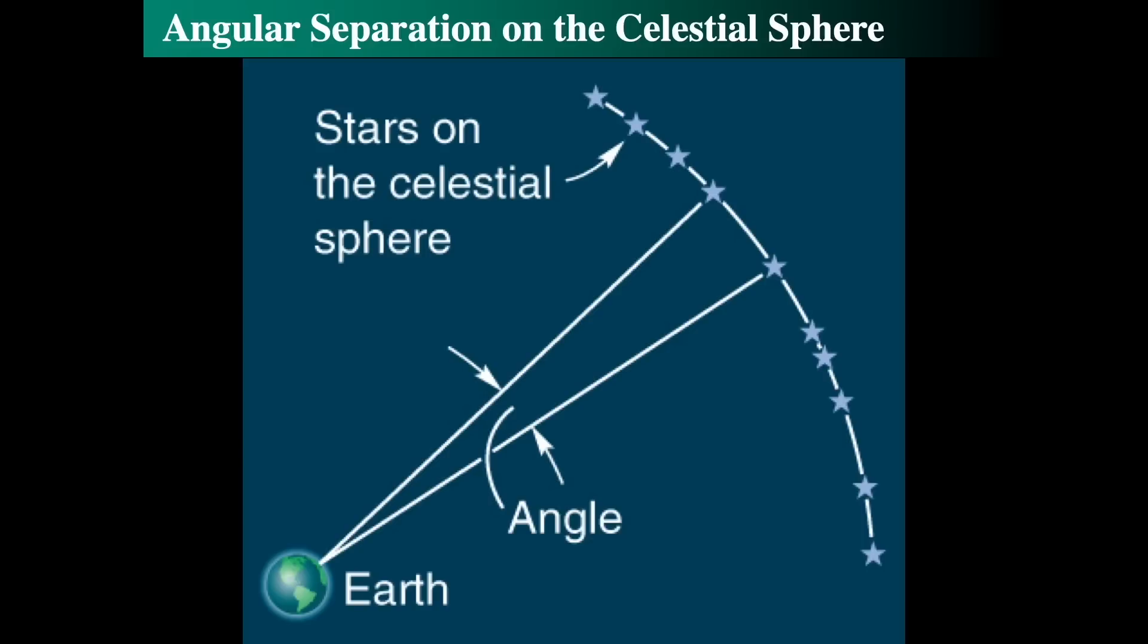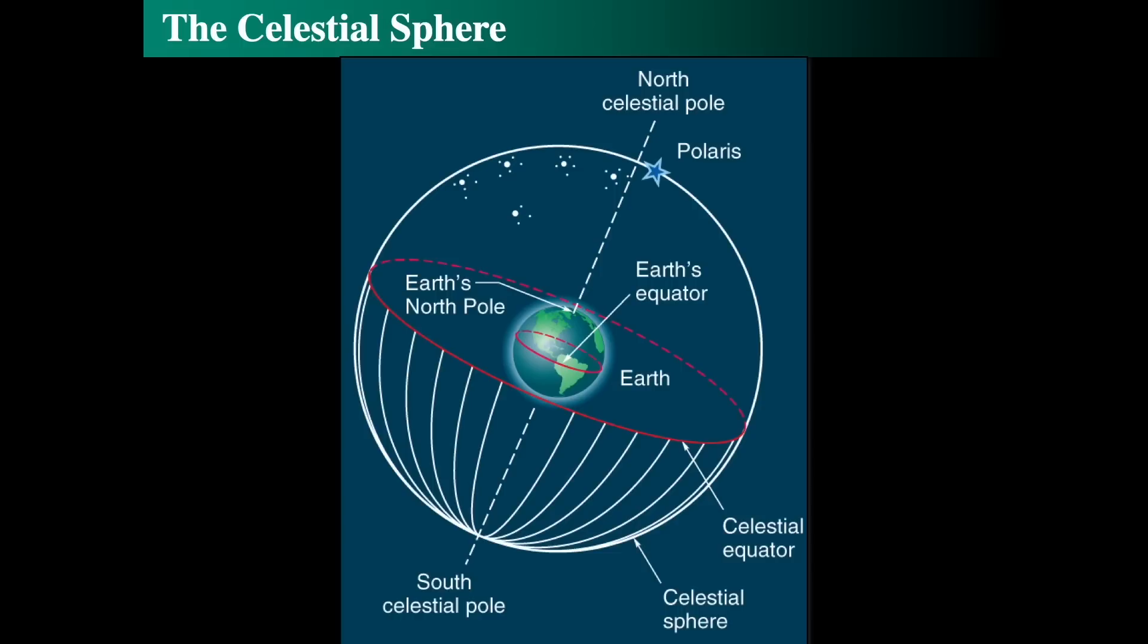Two stars, as viewed from Earth, have some angular separation on this sphere. The celestial sphere is an imaginary sphere around the Earth on which all heavenly objects appear to be located. It appears to rotate around us. We know the Earth is rotating, but we can think of the celestial sphere as rotating around us. The North Star, Polaris, is near the North Celestial Pole, where nothing appears to rotate around it. This equator is 90 degrees away from the North Celestial Pole, as well as the South Celestial Pole.